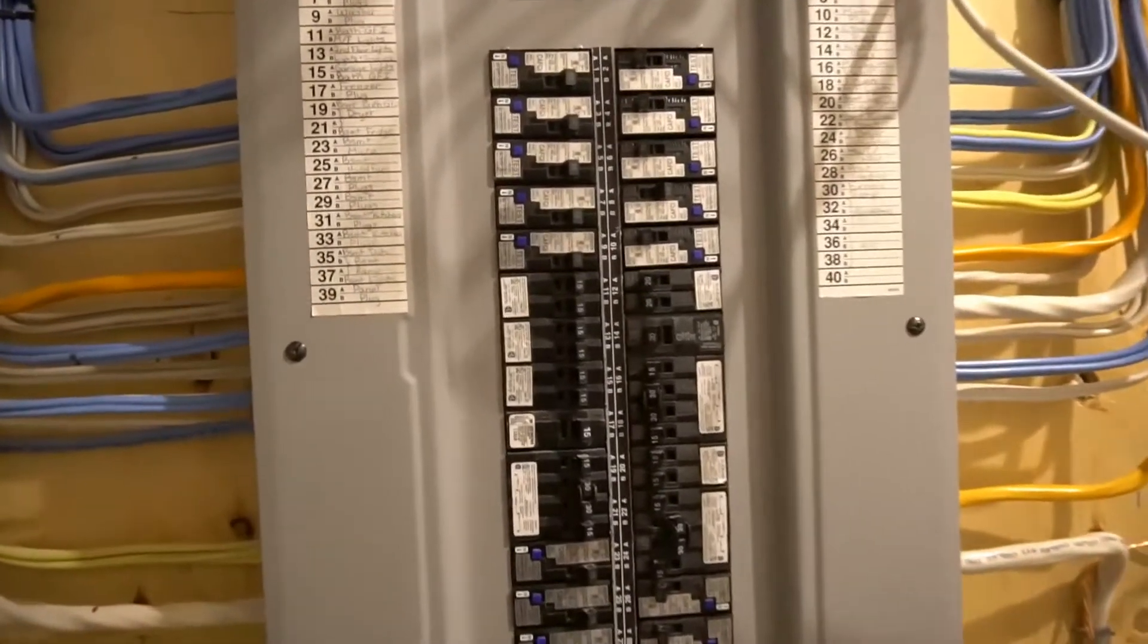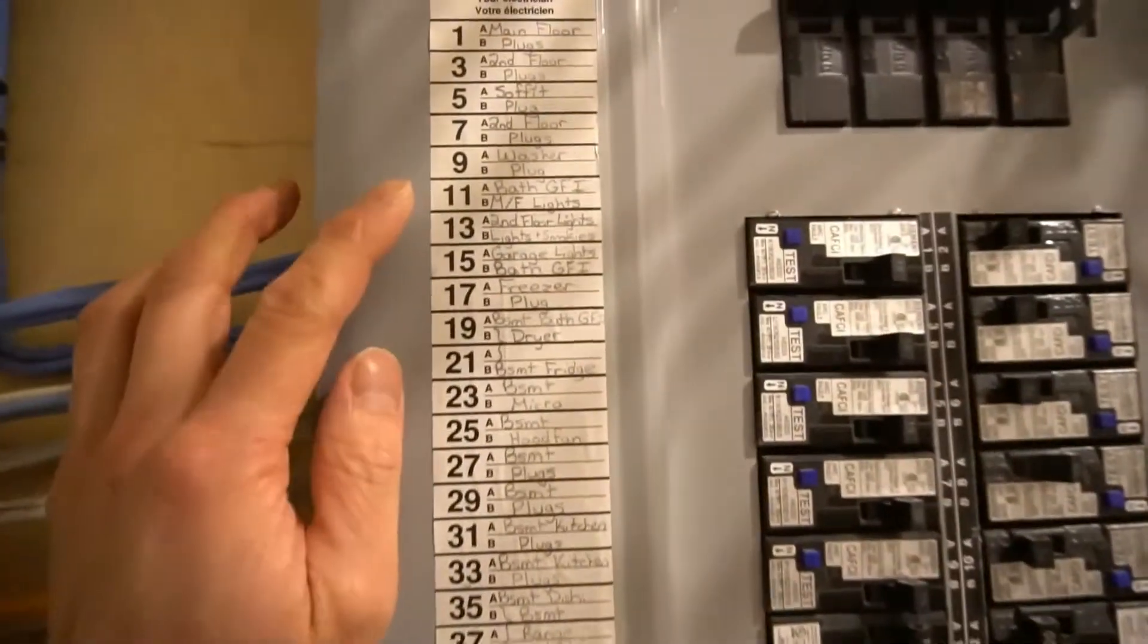Keep on watching this video, I will show you how to remove and install. First thing you want to do is turn off the breaker. I'll be looking for my washroom breaker.